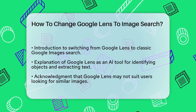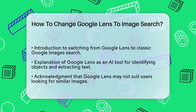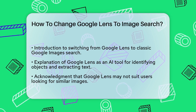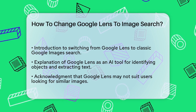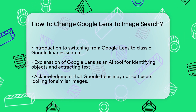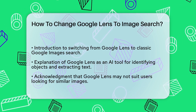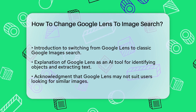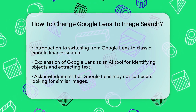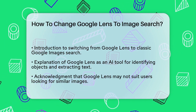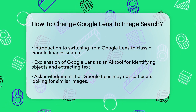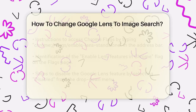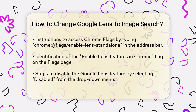First, you need to understand why Google Lens is there in the first place. Google Lens is a powerful tool that uses AI to identify objects, landmarks, and even extract text from images. However, it might not be what you're looking for if you just want to find similar images.